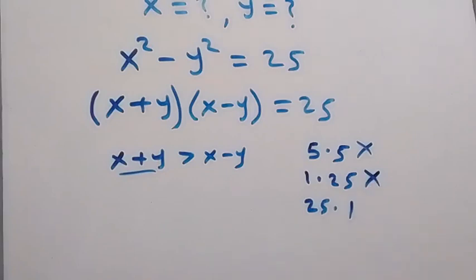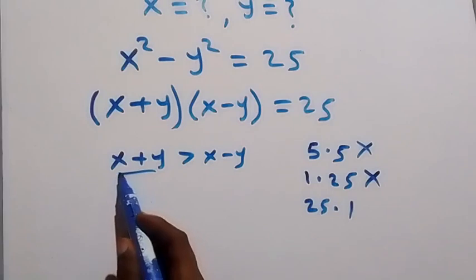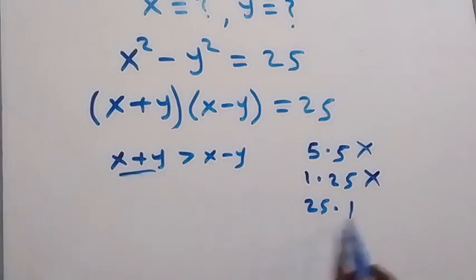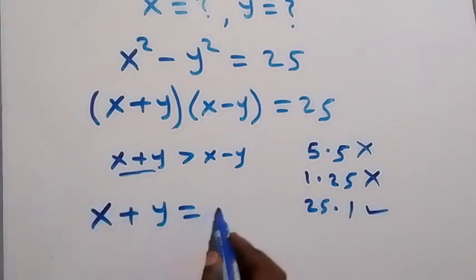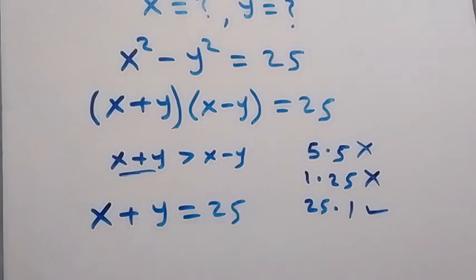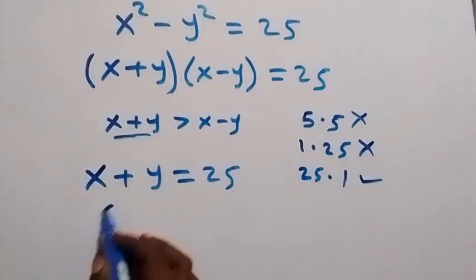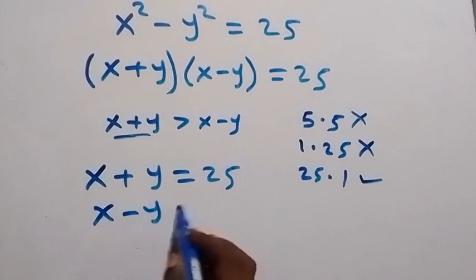Then we can say x plus y we equate it to 25. Then we now equate x minus y to 1. So we have x minus y equals to 1. Then we can solve this equation simultaneously.